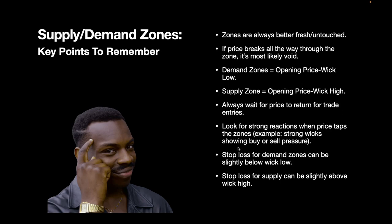Look for strong reactions when price taps the zones. For demand, you want to see nice lower bottom wick shadows pushing up to the upside. For supply, look for upper shadow wicks or reversal candles showing strong selling pressure. For stop losses: keep it slightly below wick low for demand zones, because if it breaks under it's likely going void. Stop loss for supply can be slightly above wick high, because if it closes over with the one-day candle it's likely going void.